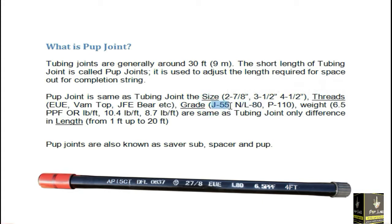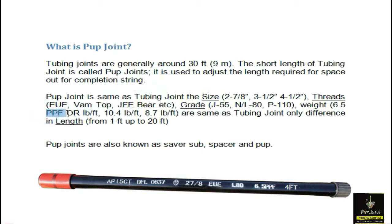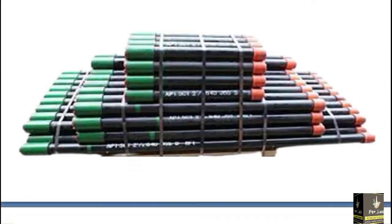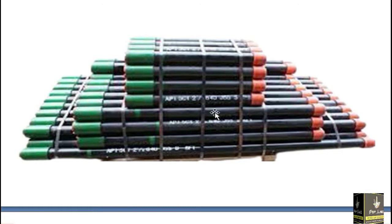This L-80 shows the grade. The grade may be J-55, L-80, or P-110. In this case it is L-80. The weight shown here is 6.5 PPF — pounds per feet. It can also be 10.4 or 8.7 PPF. The only difference is in the length. The normal tubing joint length is 30 feet, and the pup joint length varies from 1 foot to 20 feet — it is a shorter length pipe.